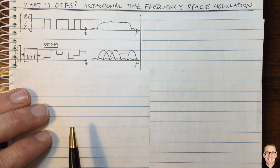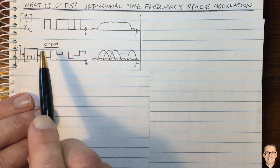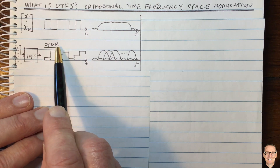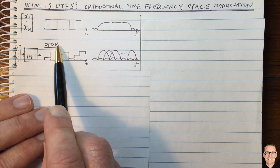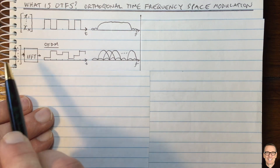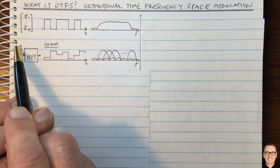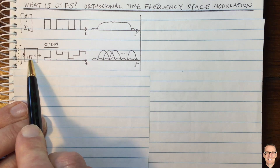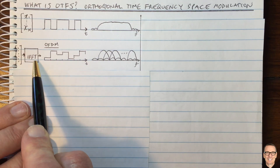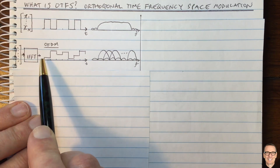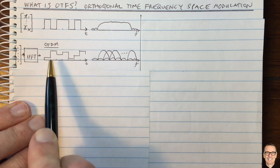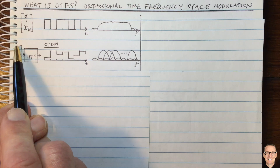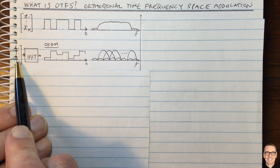That's what we do with OFDM — Orthogonal Frequency Division Modulation, or Multiplexing. In this case, we take our input data vector and first put it through an inverse fast Fourier transform. This gives us something to send in the time domain, but it has the effect of sending our data in the frequency domain, because taking the Fourier transform of the time sequence takes us to the frequency domain.